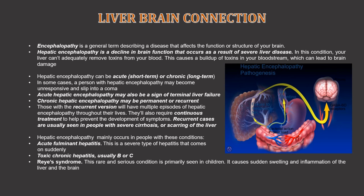Hepatic encephalopathy mainly occurs in people with the following conditions: acute fulminant hepatitis, which is a severe type of hepatitis that comes on suddenly; toxic chronic hepatitis, usually type B or type C; and Reye's syndrome, a rare and serious condition primarily seen in children that causes sudden swelling and inflammation of the liver and the brain.